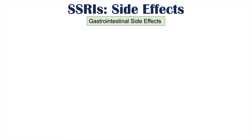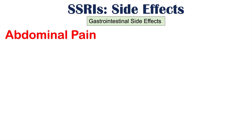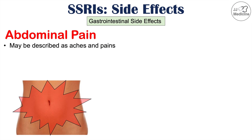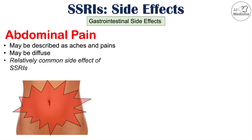Let's first talk about the side effects of normal use of SSRIs, starting with gastrointestinal side effects, as these are oftentimes very common. The first one is abdominal pain. This abdominal pain from SSRI use may be described as aches and pains, it may be diffuse throughout the entire abdomen, and it is a relatively common side effect of SSRI use.